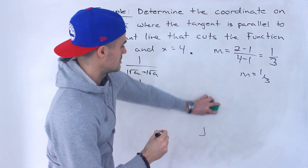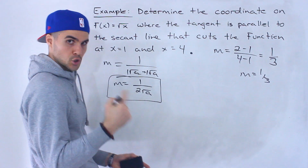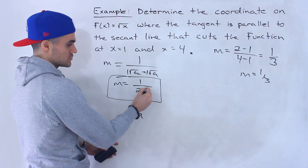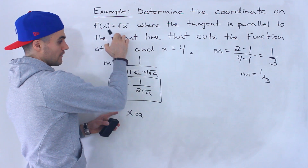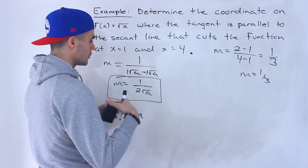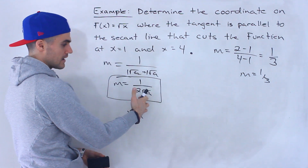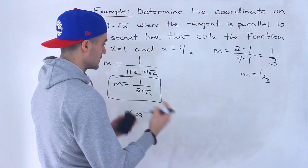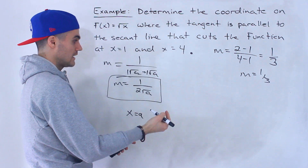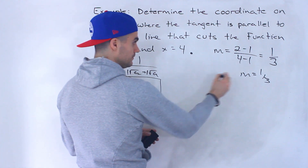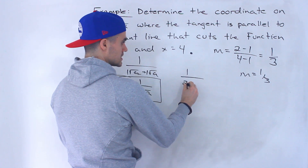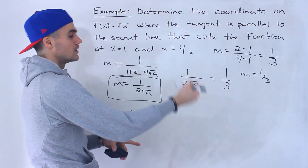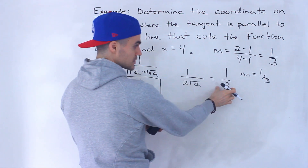This expression 1/(2√a) gives us the slope of the tangent at any x value. At any x value equal to a, we just plug that in. For example, if we wanted the slope at x = 9, we'd plug in 9: √9 = 3, times 2 gives 1/6. But we're trying to find when the slope of the tangent equals 1/3 — we're solving for the a value where that happens.